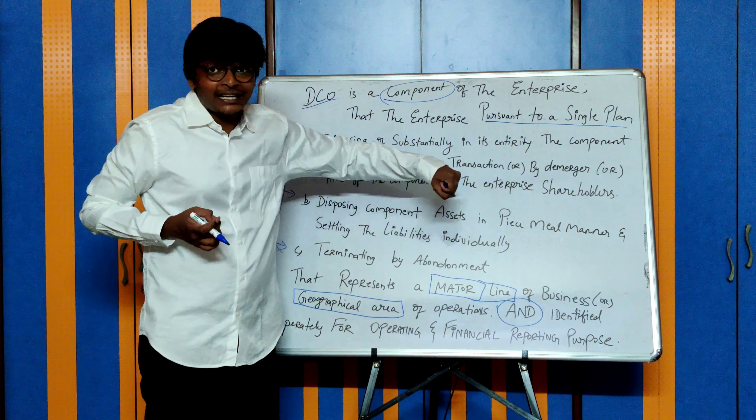What are the three ways in which you can dispose this component? First, pursuant to a single plan, disposing of substantially in its entirety the component — meaning you need to sell off the entire part substantially. You cannot sell 50% today and 50% later. A substantial part of the component has to be sold through a single sale transaction, where one contract and a lump sum amount takes away the entire business. Or by de-merger — splitting the business and making it two separate legal entities.